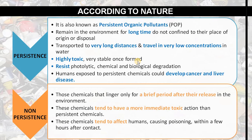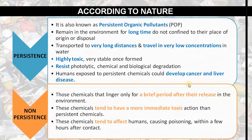Persistent waste travels in very low concentrations in water and is highly toxic, very stable once formed, and resists photolytic, chemical, and biological degradation. Humans exposed to this kind of persistent chemical waste could develop cancer and liver disease.